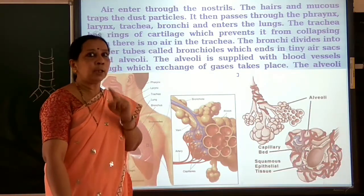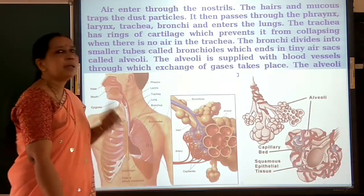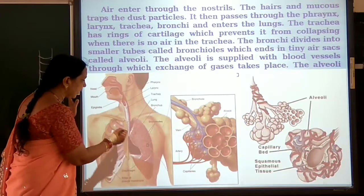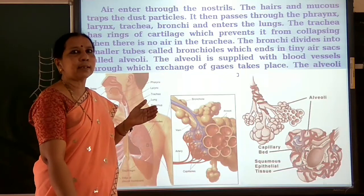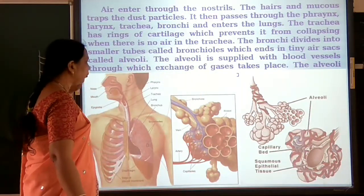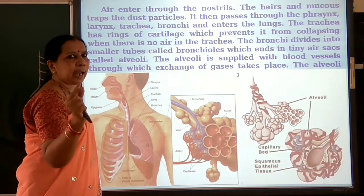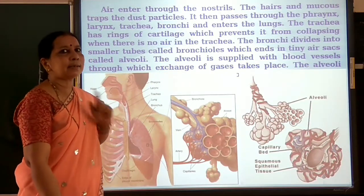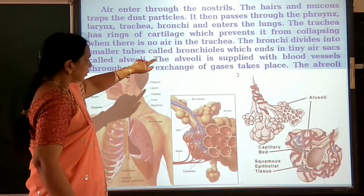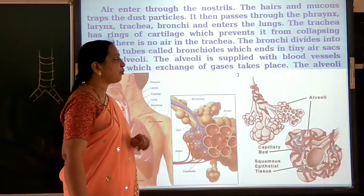If there were no cartilage rings, the trachea might collapse when there is no air. So to prevent collapsing, it has cartilage rings. Inside the lungs, the bronchi divide into smaller tubes called bronchioles, which end in tiny air sacs called alveoli. Each lung has millions of air sacs richly supplied with blood vessels, which increase the surface area for absorption. The alveoli are supplied with blood vessels through which exchange of gases takes place.